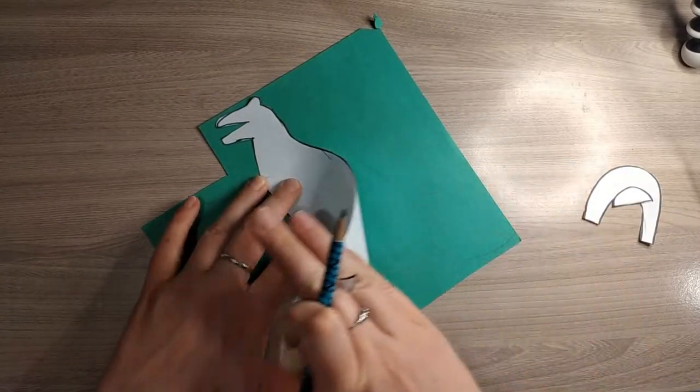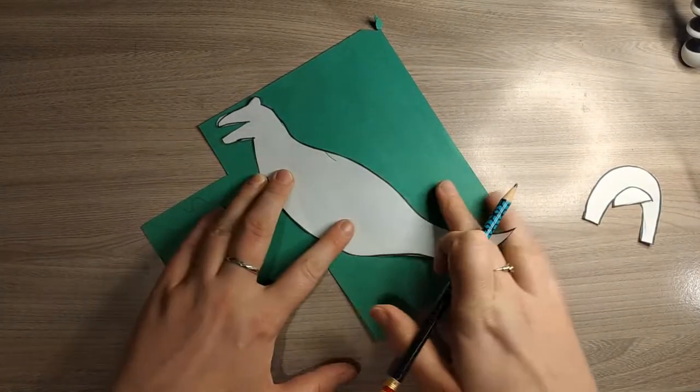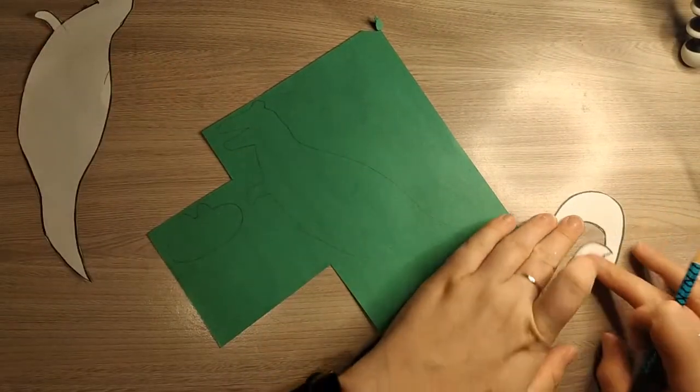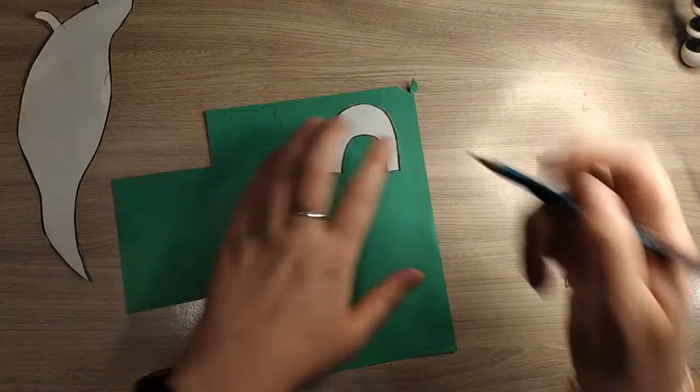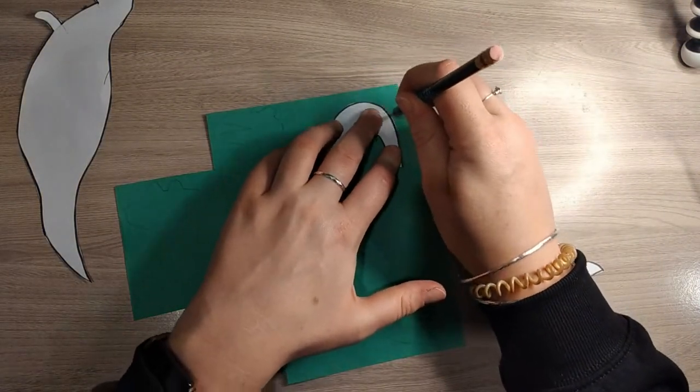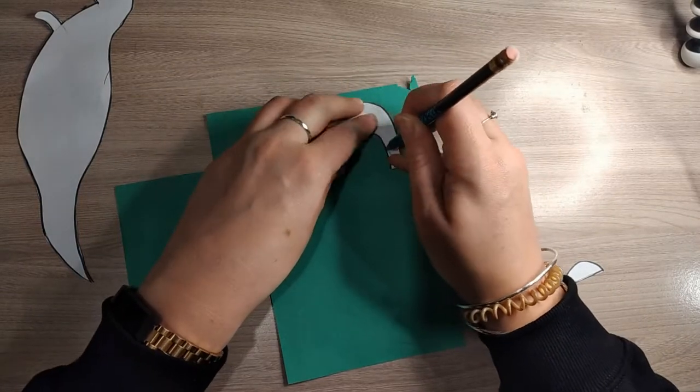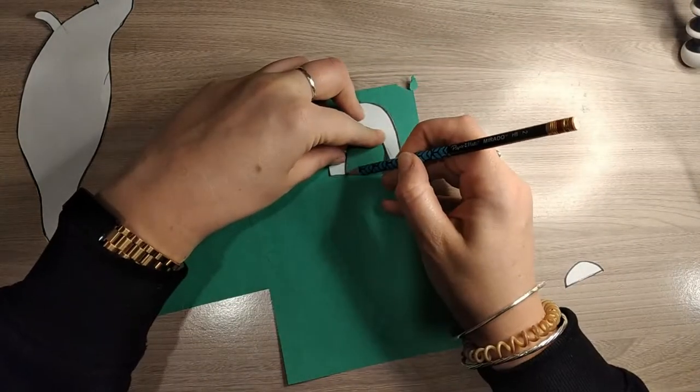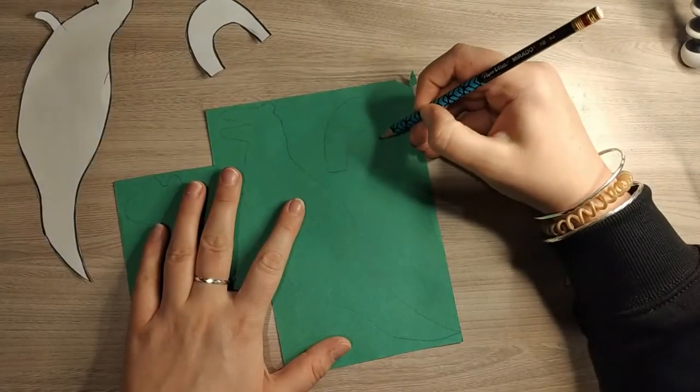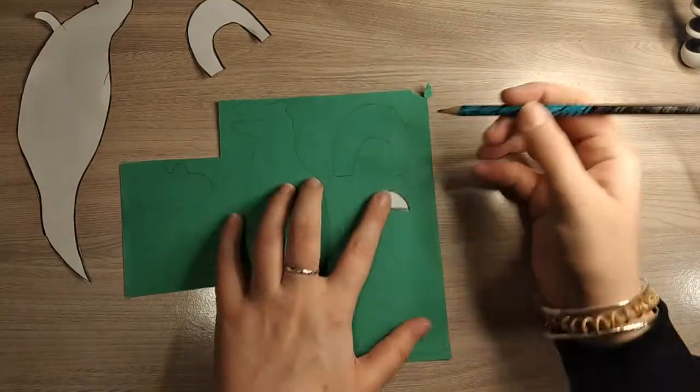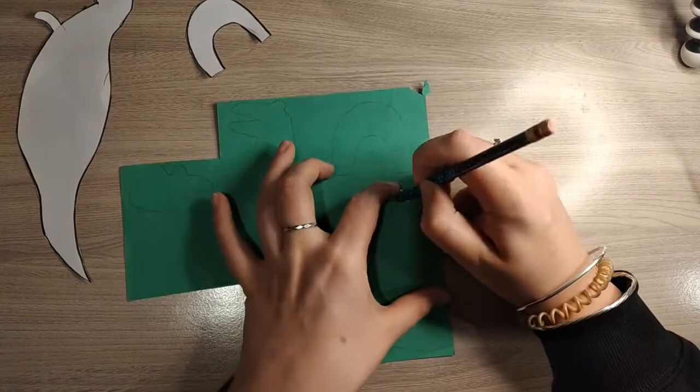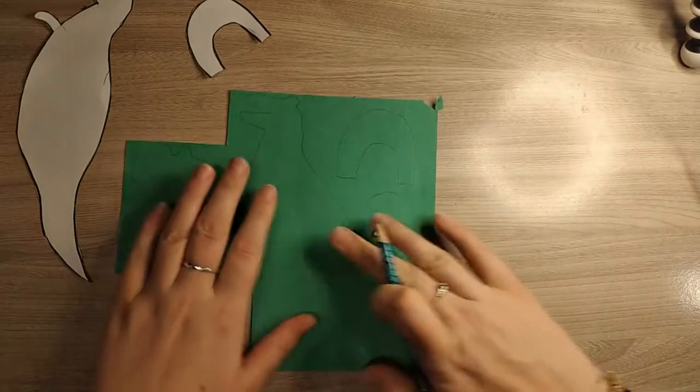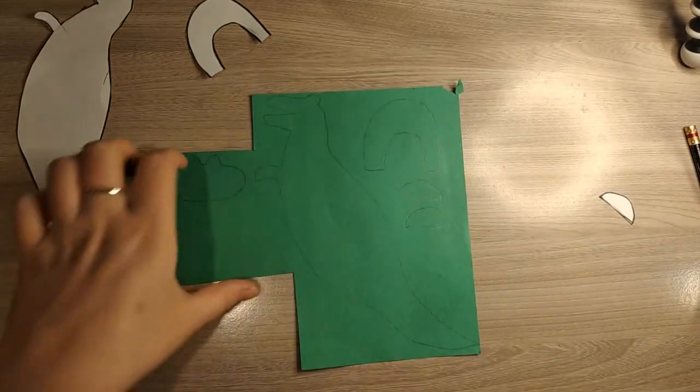Now I'm just going to lift it up a little bit to make sure I got everything, which I did. So I'm just going to put my body template to the side and I'm going to get my leg template. There we go, and finally the foot. I'm going to need two of these. There we go, now I'm going to cut it out.